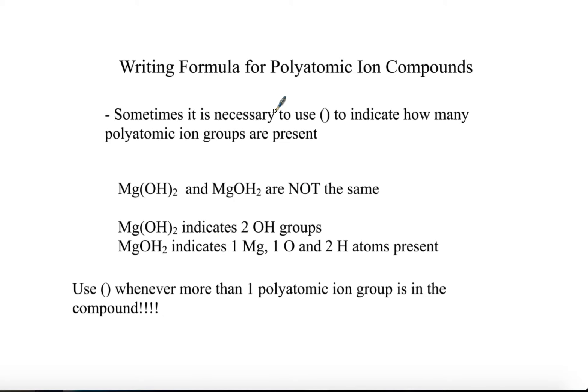Just a word of caution here, when you do write the formula including polyatomic ion compounds, sometimes you have to use parentheses in order to indicate how many polyatomic ion groups there are. What I mean by that is taking this example, magnesium hydroxide, Mg(OH)2, and MgOH without the parentheses and 2.